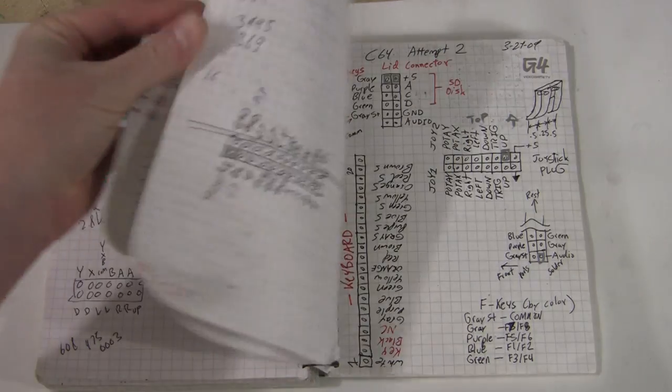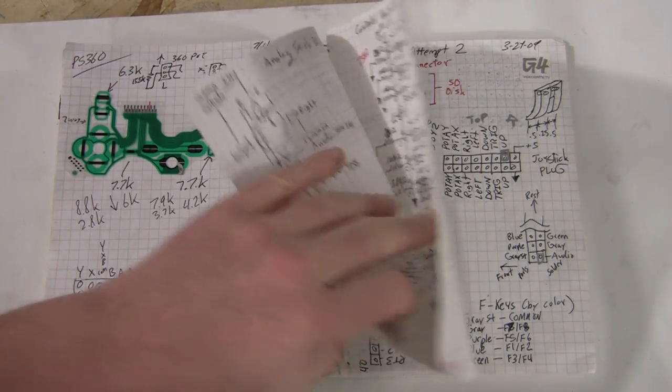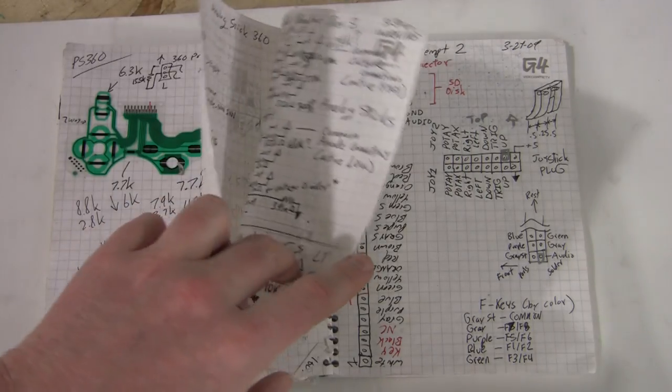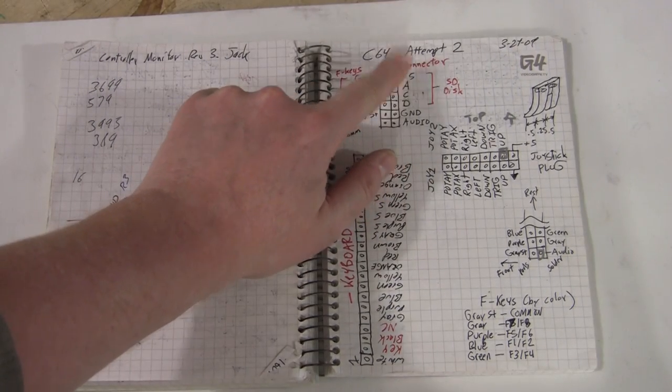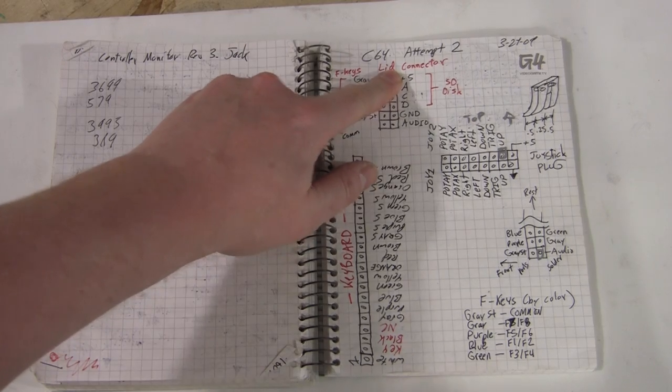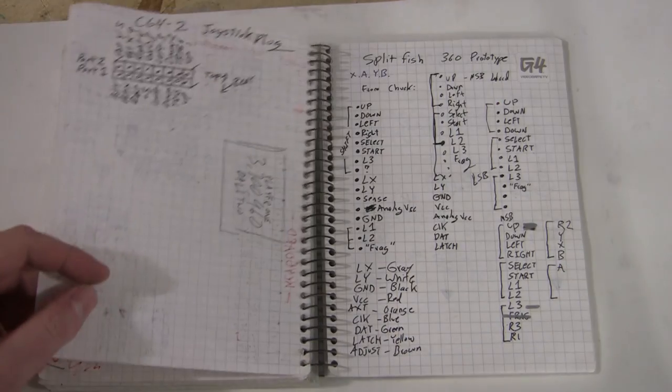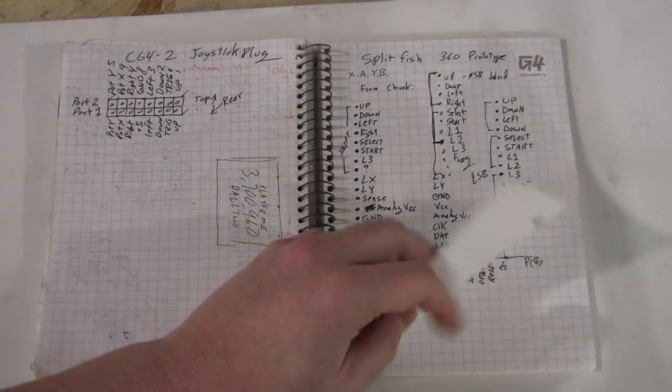Not sure why these are stapled together. I don't think there's anything super secret inside. I think it was basically old irrelevant data, so I just stapled it up. Commodore 64 Attempt 2. So that's when I was actually trying to figure it out. And the second attempt worked pretty good. Now there's another prototype I did.